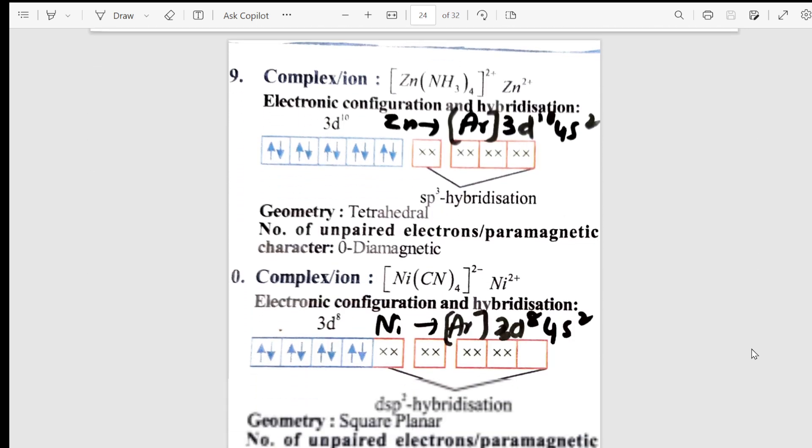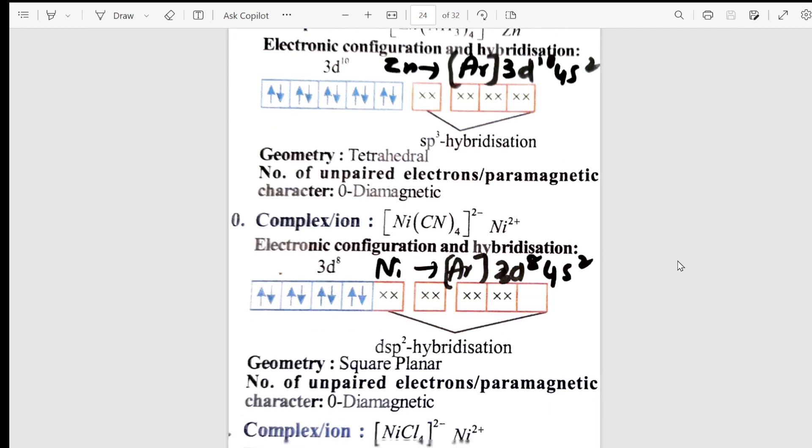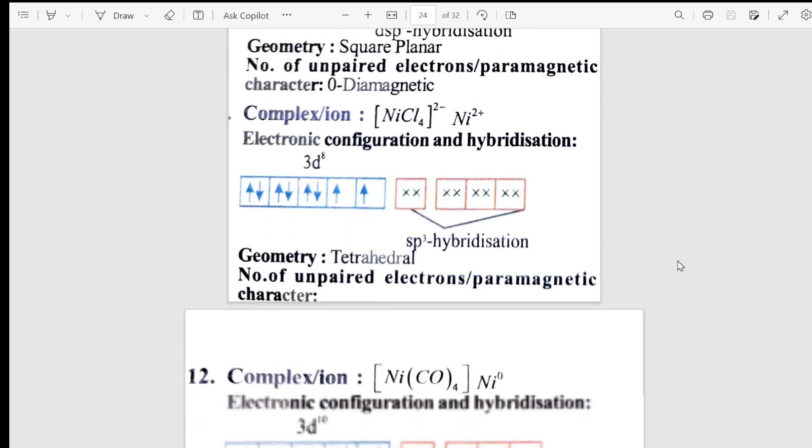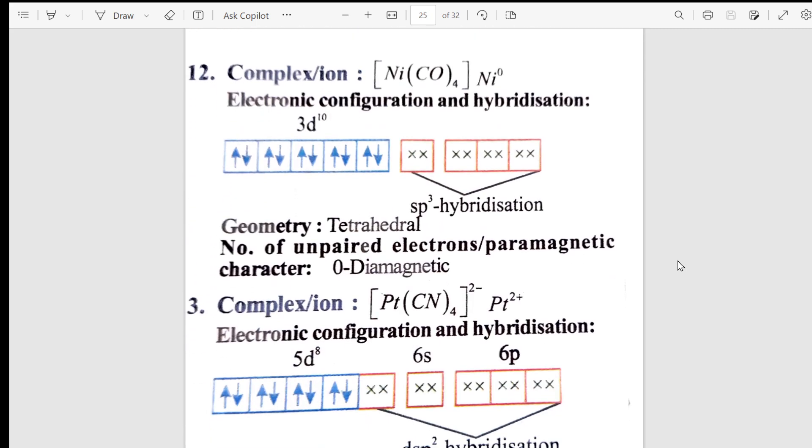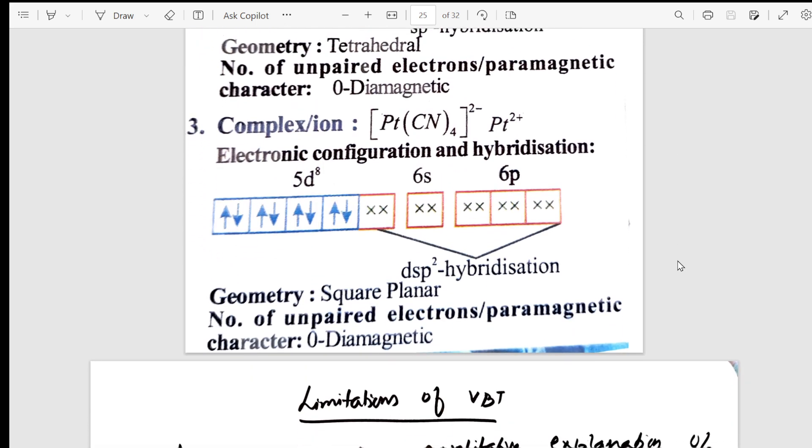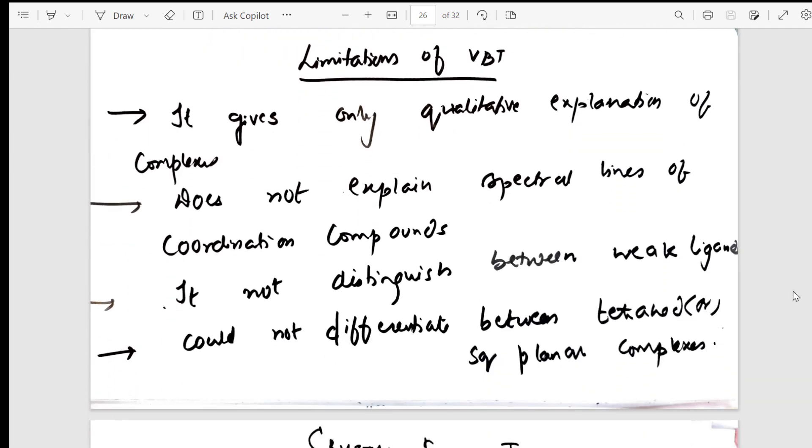Then I have taken certain examples which are very important in terms of board. How they are asked - if they ask you how do you write the configuration, what is the geometry, number of unpaired electrons, what is the character paramagnetic or diamagnetic, magnetic moment. From there gradually I've taken different examples so that all the examples are covered. Then from there after taking so many examples, I have taken into limitations of VBT.